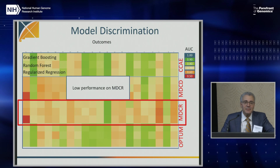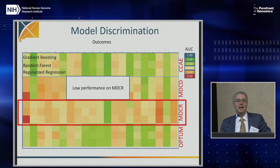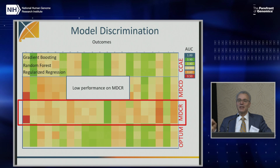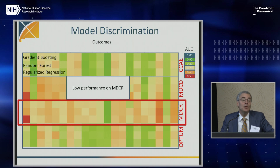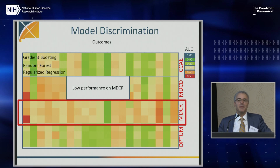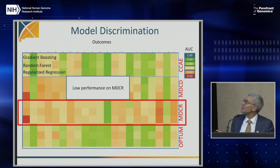Why does Medicare do worst? It's probably the hardest database — if you have a database of young people, it's easy to predict who won't get heart failure. If you have a database of sick old people, figuring out which ones will get heart failure is a harder problem. The AUC should really be normalized to severity. If you want to predict who with heart failure in the past will get it again in the future, just ask who had it before — that's one factor that should be factored out.